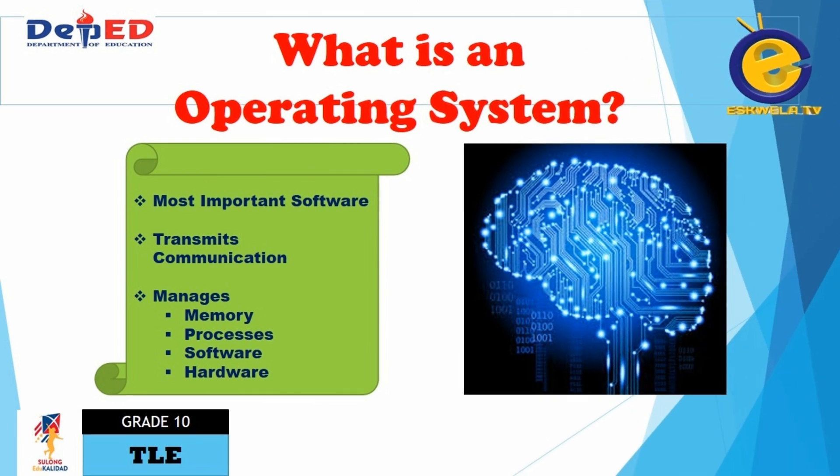What is an operating system? It is a set of programs that manage computer hardware resources and provide common services for application software. The operating system is a vital component of the system software in a computer system. Application programs require an operating system, which are usually separate programs but can be combined in simple systems.